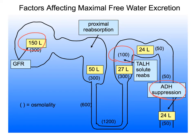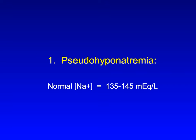Now let's look at three less common but very interesting causes of hyponatremia. The first is pseudo-hyponatremia. The so-called normal value of the serum sodium concentration is 135 to 145 mEq per liter.